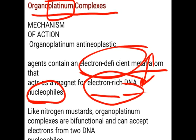Like nitrogen mustard, the organoplatinum complex forms a bifunctional species and can accept electrons from two DNA molecules. One part of the organoplatinum complex binds to one DNA, and the other part binds to a second DNA. This is similar to nitrogen mustard, which binds to the N7 position of guanine of one or different DNA strands. In this way, one drug is responsible for binding to two DNA molecules, damaging two sites at a time.